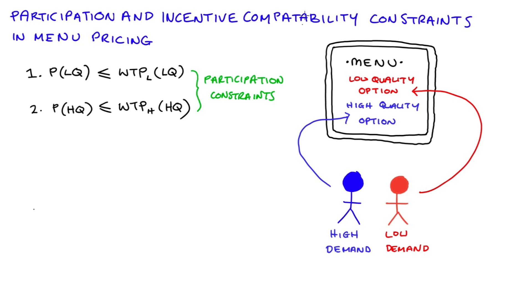The next two conditions will be our incentive compatibility constraints, which make sure that our consumer types select into those options that are designed for them by the firm — so the low demand consumer chooses the low quality option and the high demand consumer chooses the high quality option. Thinking about the low demand consumer first, we have to make sure that the low demand consumer is happier buying and consuming the low quality option than they would be if they bought the high quality option. In economic terms, the consumer surplus that the low demand consumer gets from the low quality option must be greater than or equal to the consumer surplus they would get from the high quality option.